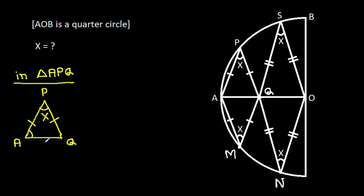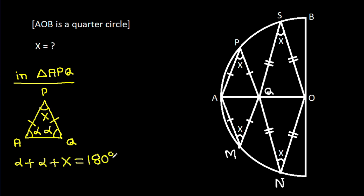That means these two angles will be equal. Suppose alpha. So alpha plus alpha plus X equals 180 degrees. So alpha equals 90 degrees minus X over 2.